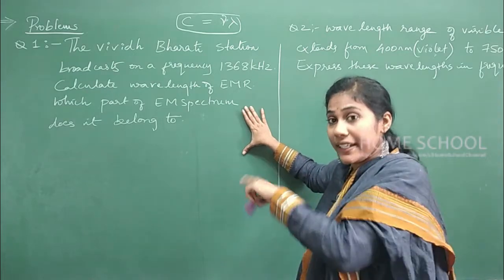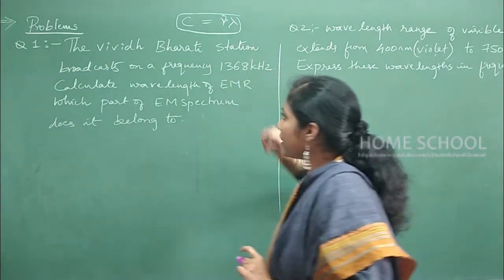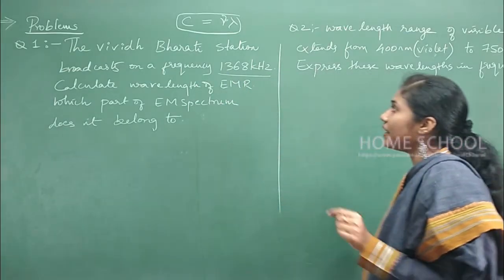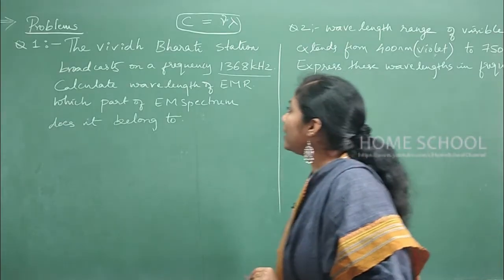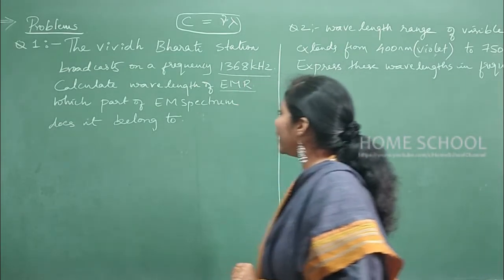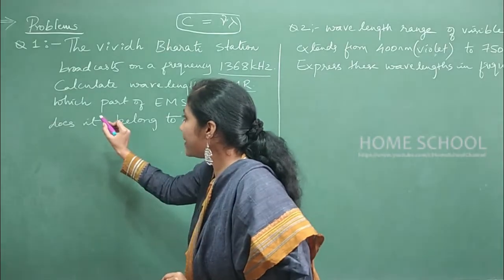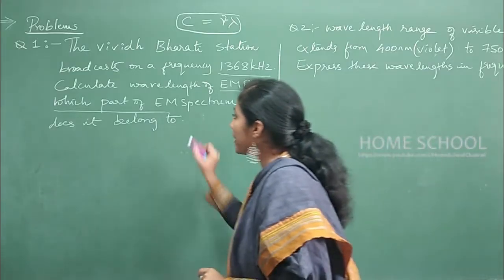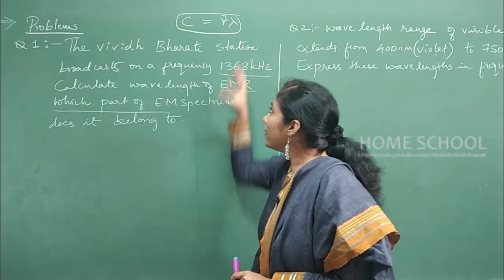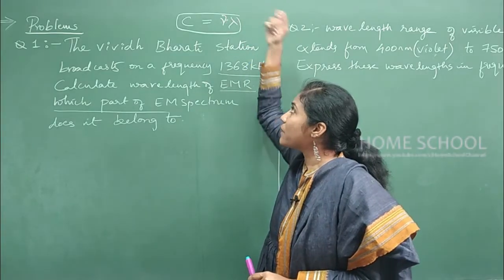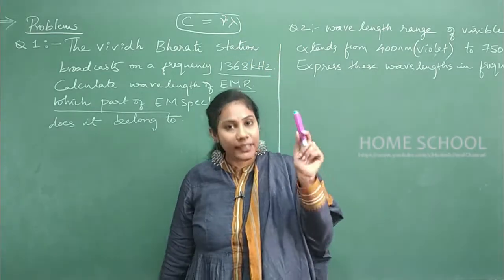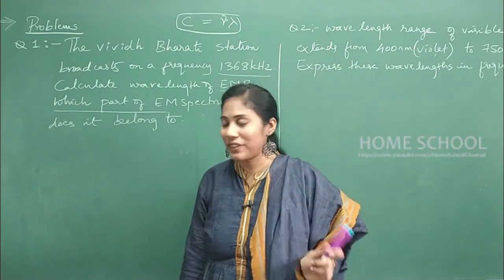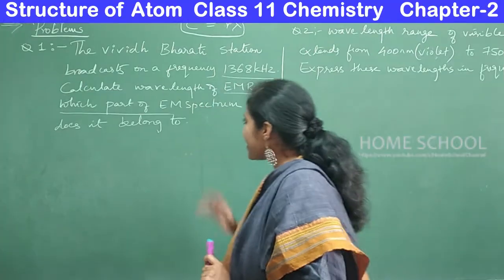The first problem is from the NCERT textbook in-text questions: The Vivid Bharati station broadcasts at a frequency of 1368 kHz. Calculate the wavelength of the electromagnetic radiation emitted. Also determine which part of the electromagnetic spectrum it belongs to. We discussed how this formula was derived in the previous class — the link is in the description.